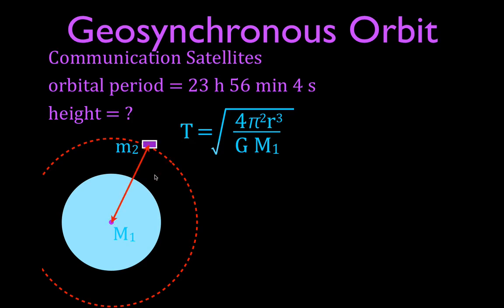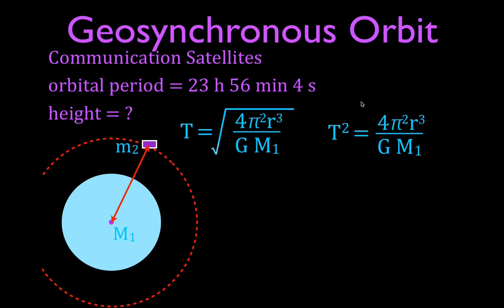In the previous video, we used this equation to calculate the orbital period with respect to the height. R is the distance from the center of the Earth to the satellite — not just the height above the surface — so we'll need to subtract the Earth's radius, 6,371 kilometers, to find the actual height. We're going to square both sides: T squared equals 4π² times R³ divided by G times M, where G is the gravitational constant and M is the mass of the Earth. We'll solve for R cubed first, then take the cube root.